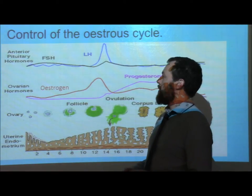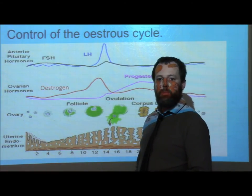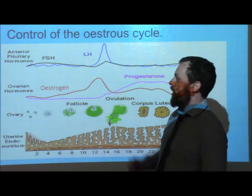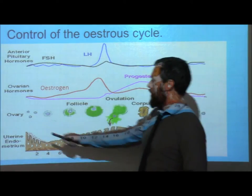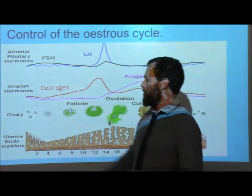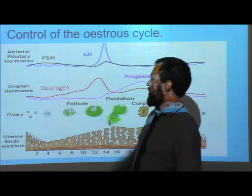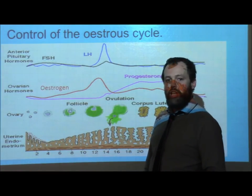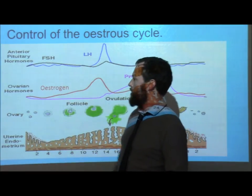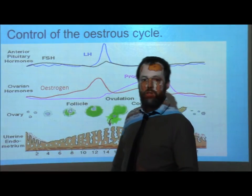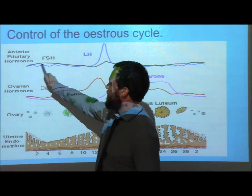This video is looking at the interaction of different female hormones in the role of the oestrus cycle. At the beginning of the oestrus cycle, just after the uterus lining has been shed, the level of progesterone is low. Progesterone inhibits the hormone FSH, so a low level of progesterone means that we can have an increased level of FSH.